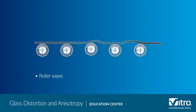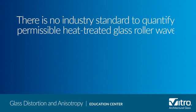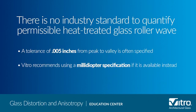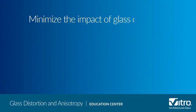Because of its fluidity during heat treating, glass is susceptible to bow, warp, and roller wave. While there is no industry standard to quantify permissible heat treated glass roller wave, a tolerance of five thousandths of an inch from peak to valley is often specified. Vitro recommends using a millidiopter specification if it is available instead.